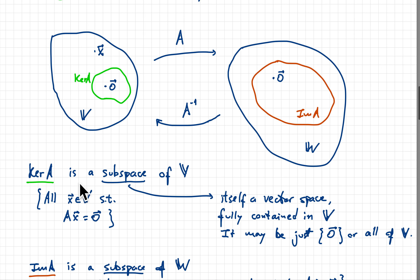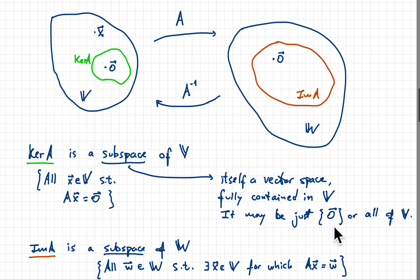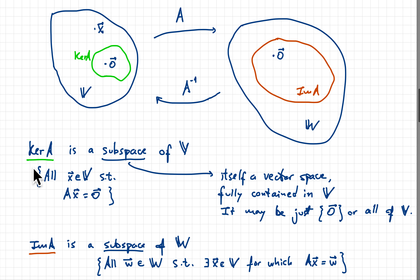The kernel of A is actually a subspace of V. The kernel is the set of all vectors X in V such that A applied to X gives the zero vector. It turns out to be a subspace — meaning it's itself a vector space fully contained in V. It may just be the zero vector, it could be all of V, or anything in between. The addition of two vectors in the kernel stays in the kernel, and scalar multiplication of a vector in the kernel stays in the kernel.